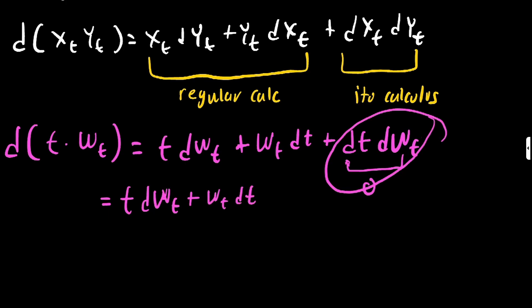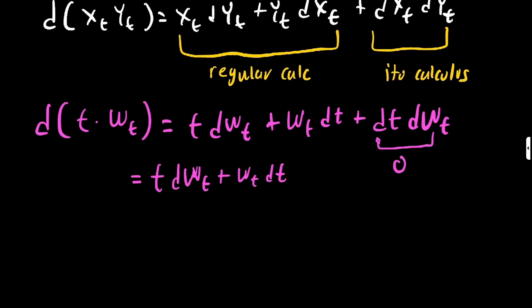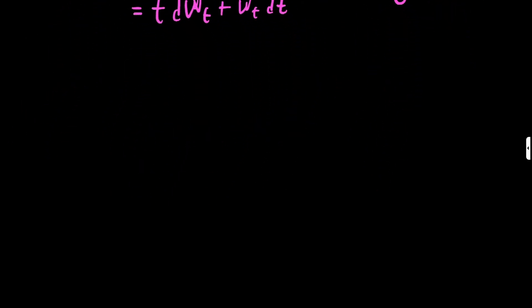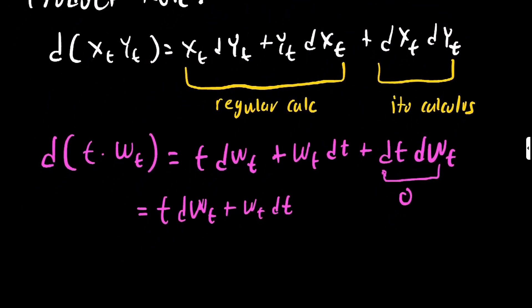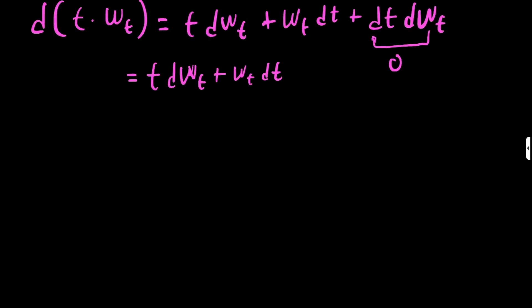Now does that mean we ignore this term? Absolutely not. This is not the only case that's going to occur when you have differential problems. However, it is important to note that this property is extremely important. Before I move on to the quotient rule, there are some things that we should definitely know. One is that dt dW_t is equal to zero, which is also equal to dt squared, and that dW_t squared is actually just dt.